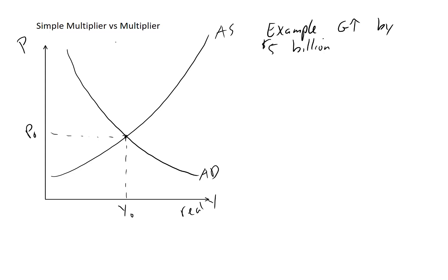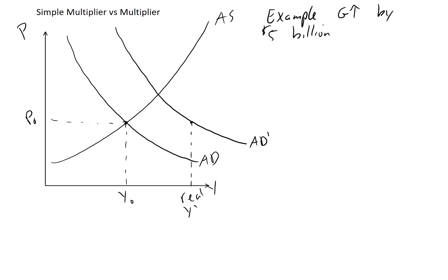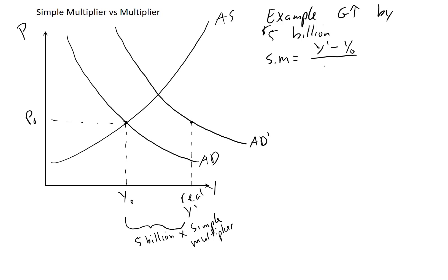So we're going to have a horizontal shift with this new AD curve. Let's label that y-prime for now. The distance between y0 and y-prime is going to be five billion times that simple multiplier. So if we knew the horizontal shift and we knew how much government expenditure went up by, we could figure out what the simple multiplier is. The simple multiplier equals, according to this graph, y-prime minus y0 — that horizontal distance — divided by five billion.